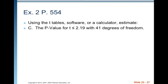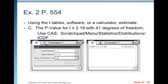To find p-values, it's easiest to use our calculator with T-CDF. We want the p-value for T ≤ 2.19 with 41 degrees of freedom. On the CAS, go to scratchpad, menu, statistics, distributions, T-CDF. Since it's less than or equal to 2.19, our lower bound is negative infinity, upper bound is 2.19, with 41 degrees of freedom. We get a probability of approximately 0.9829, and that is our p-value.